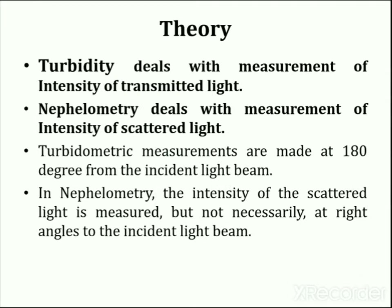Theory of turbidometry and nephelometry: Turbidometry deals with measurement of intensity of transmitted light, so turbidometric measurements are made at 180 degrees from the incident light beam. Nephelometry deals with measurement of intensity of scattered light, so the intensity of scattered light is measured but not necessarily at right angles to the incident light beam.